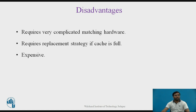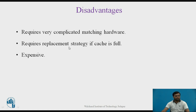The disadvantages are: first, it requires very complicated matching hardware because multiple comparators are used — one per cache line — to simultaneously examine all tag bits. Second, it requires a replacement strategy: unlike direct mapping where replacement follows round-robin order, here any block can occupy any line, so when all cache lines are full, a strategy such as FIFO (first come first served) or LRU (least recently used) is needed to decide which block to replace. Third, it is expensive due to the multiple comparators used with each cache line.